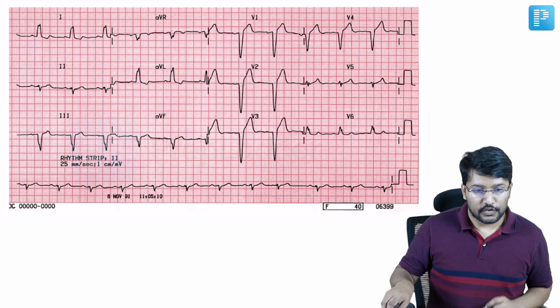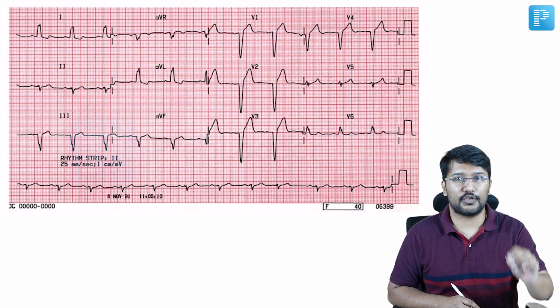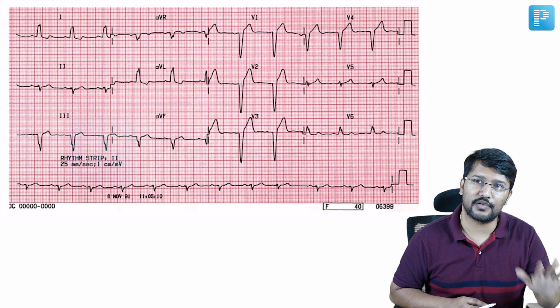They may ask you to pick up which of the following is false regarding MI in pre-existing LBBB. So, what is Sgarbossa's criteria? This is basically the criteria that helps you to diagnose with reasonable specificity MI in patients with pre-existing left bundle branch block. In front of you, you have an ECG.